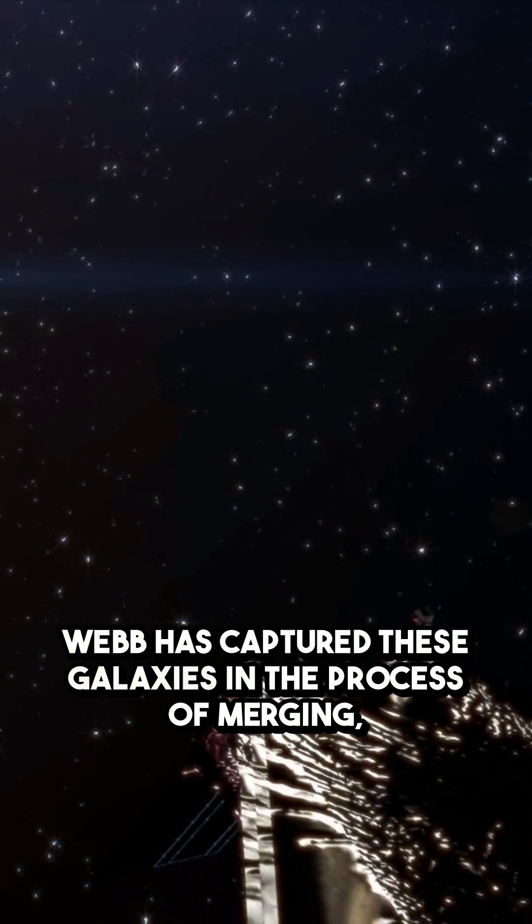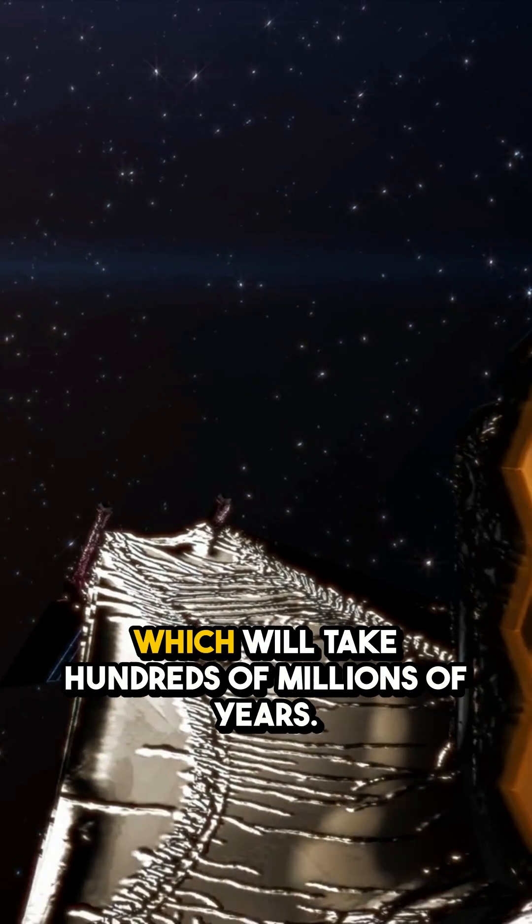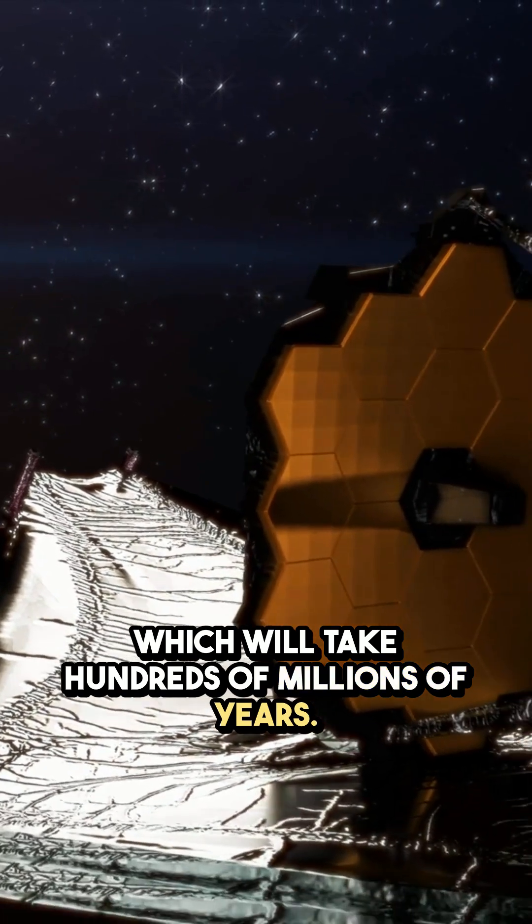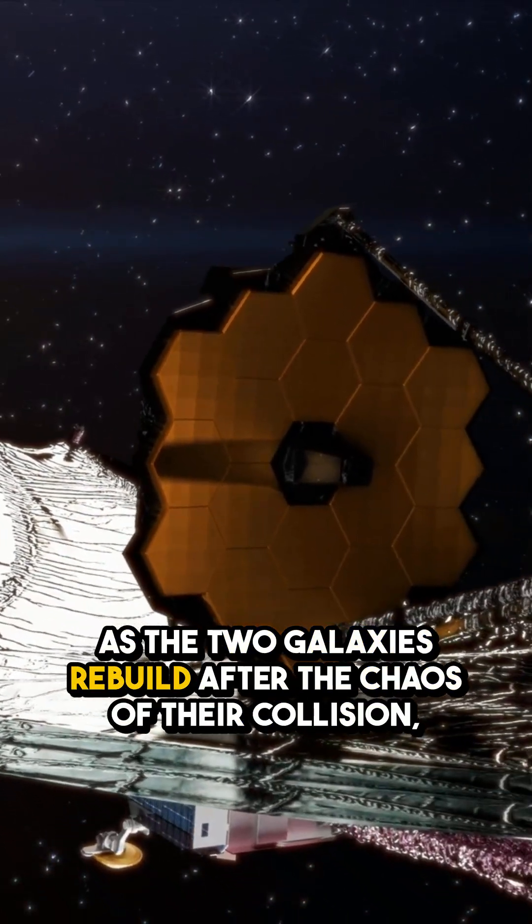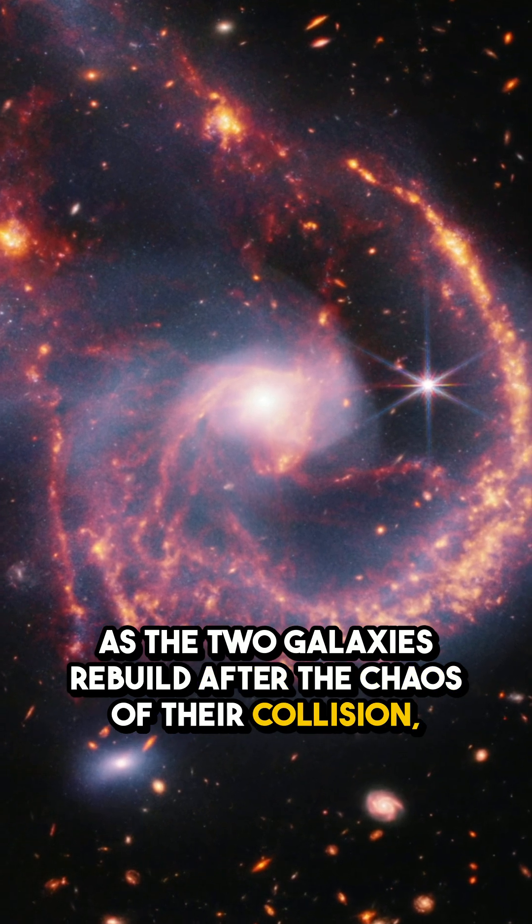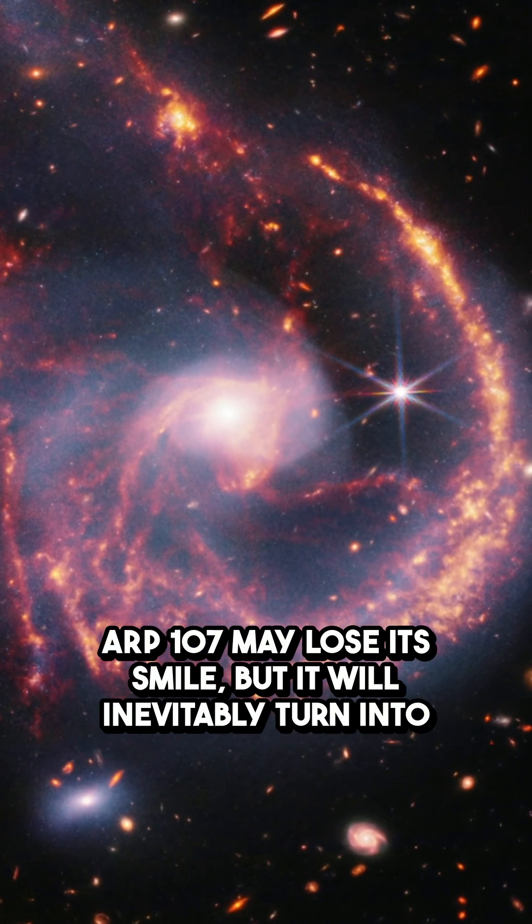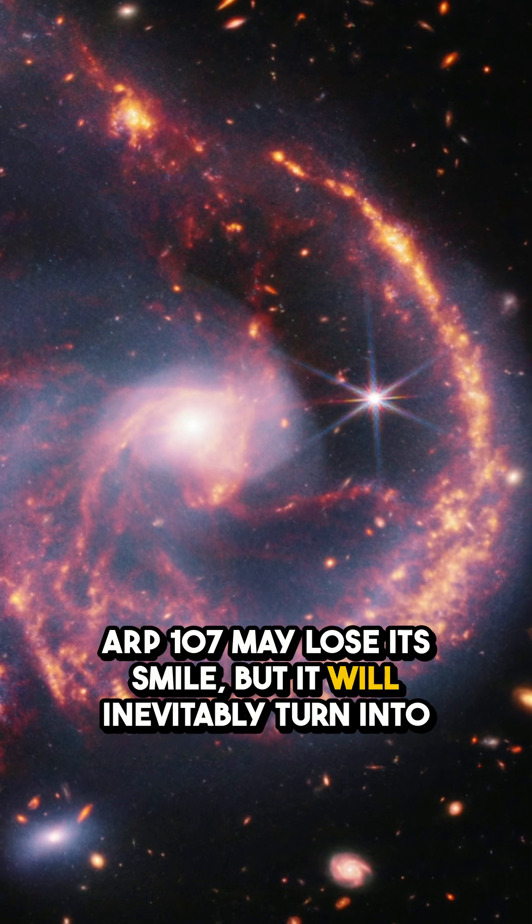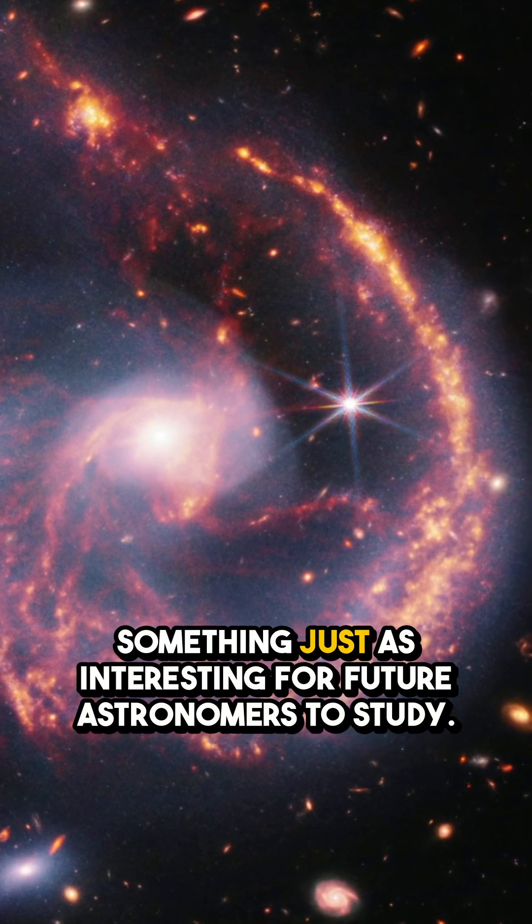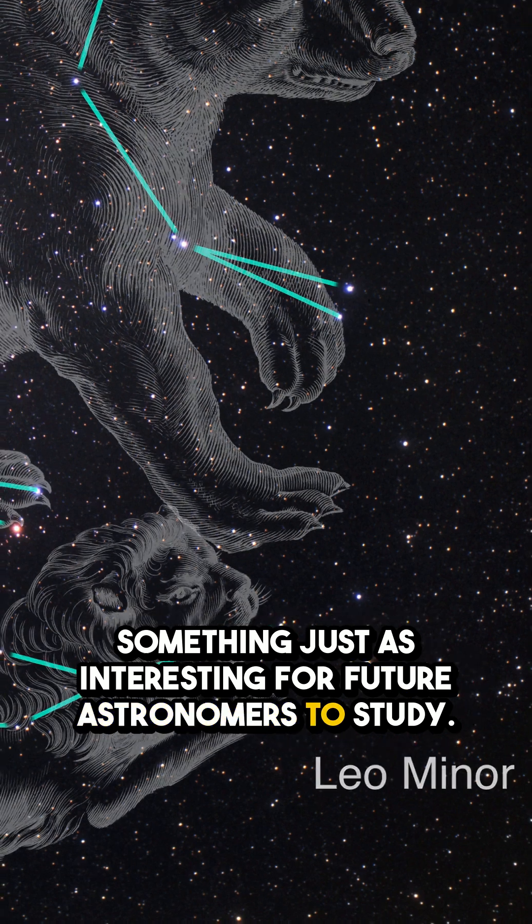Webb has captured these galaxies in the process of merging, which will take hundreds of millions of years. As the two galaxies rebuild after the chaos of their collision, ARP-107 may lose its smile, but it will inevitably turn into something just as interesting for future astronomers to study.